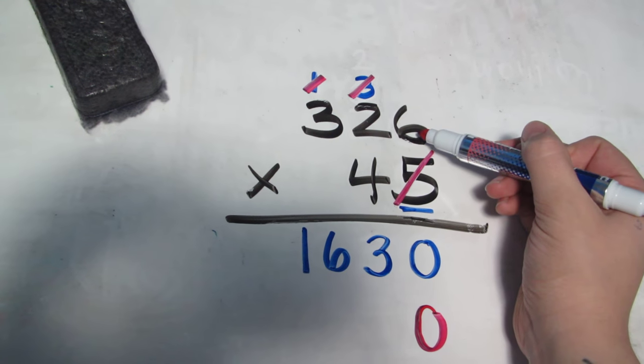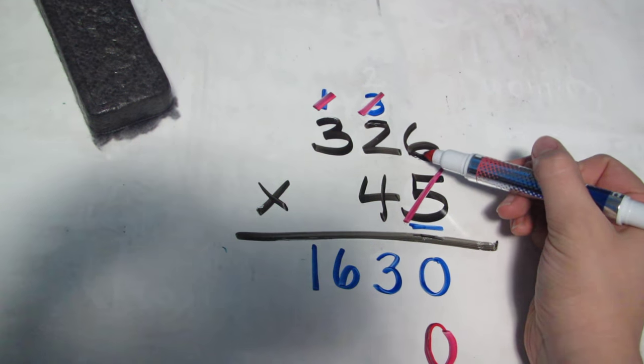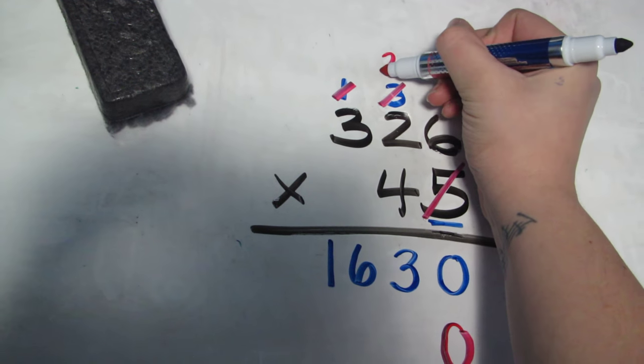4 times 6 is 24. I'm going to do the same thing, 24.